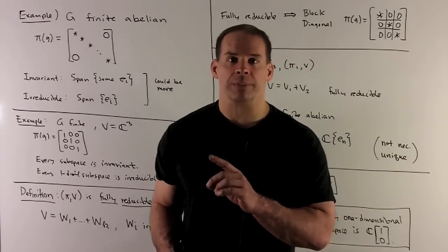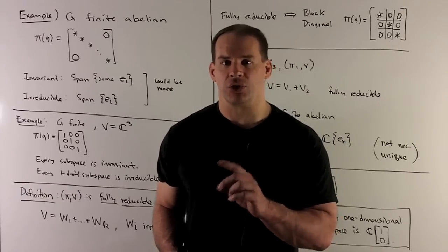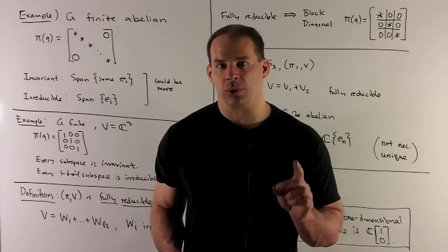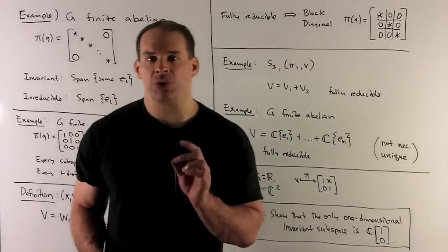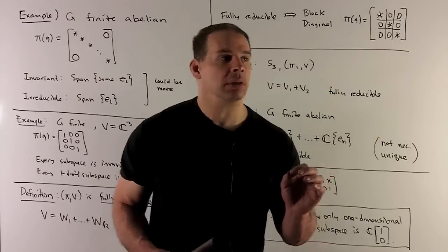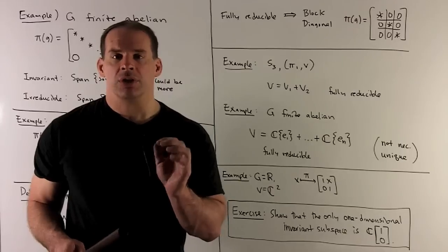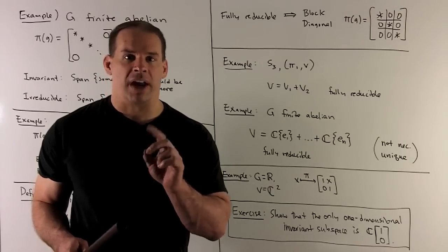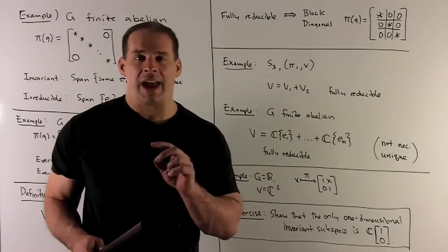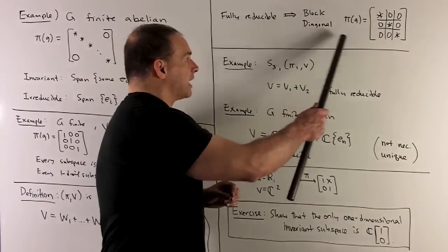Next, we have a definition. We'll say (π, V) is fully reducible if we can write V as a direct sum W₁ ⊕ ⋯ ⊕ Wₖ, where each Wᵢ is irreducible. So if I choose a basis for each Wᵢ, that's going to put our matrices in block-diagonal form. That's going to be half of the result that we want — when G is finite, if I have a finite-dimensional representation, there's going to be a basis that puts us in block-diagonal form with unitary blocks. So if we can show full reducibility, we'll get block-diagonal for free.